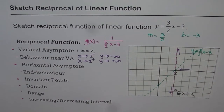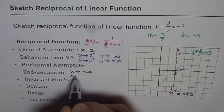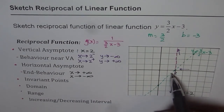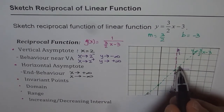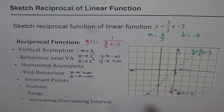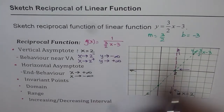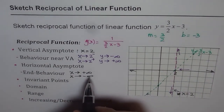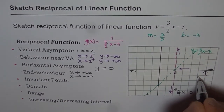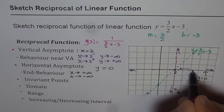Now let's look at the horizontal asymptote. We consider what happens as x approaches plus infinity and minus infinity. As x approaches plus infinity, the denominator becomes large and positive, giving a small positive value approaching zero. As x approaches minus infinity, the denominator is large and negative, so the reciprocal approaches zero from the negative side. Since we approach a fixed value of zero, the horizontal asymptote is at y equals 0.